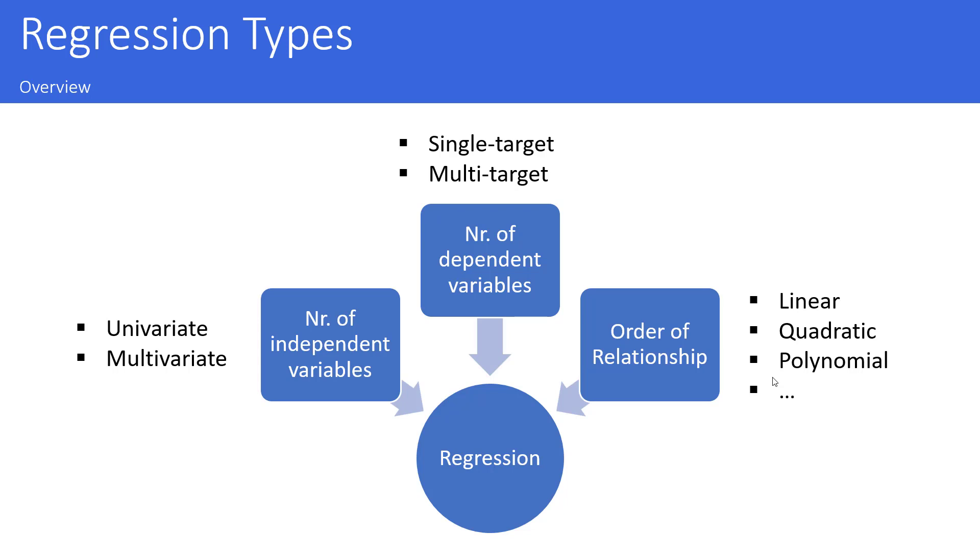Finally, the order of the relationship between independent and dependent variable is important. This relationship might be linear, first order, quadratic, which means second order, or it might be any other order.